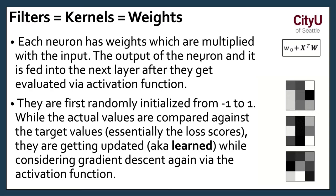We have filters, kernels, and weights. Each neuron has weights which are multiplied with the input and the output of the neuron, and it's fed to the next layer after they get evaluation via the activation function. Again, the relu. This is similar to what we had last week with the deep learning. Next, they are first randomly initialized from negative one to one. While the actual values are compared against the target value, essentially the loss scores, they're getting updated, aka learned, while considering gradient descent, again, via the activation function.